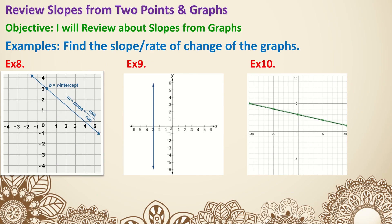Example 8. We have a point up top and another point down below. Going down 1, 2, 3 — that's a negative 3. Then going to the right 1, 2, 3, 4 — that's a positive 4. Negative 3 over 4 simplifies to negative three-fourths.